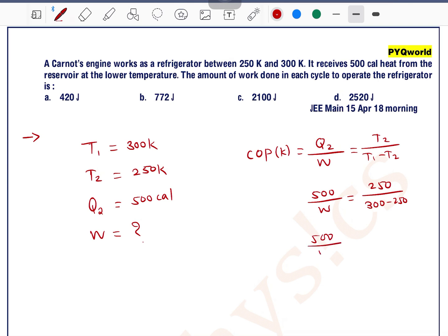So 500 divided by W is equal to 250 divided by 50. So this cancels out, this will be 5, so work is equal to 100.